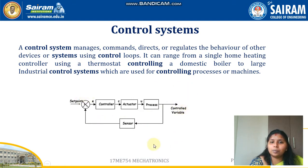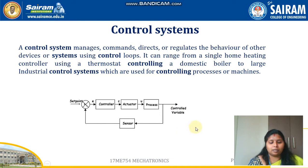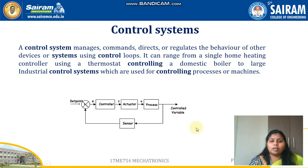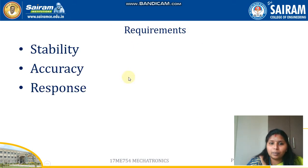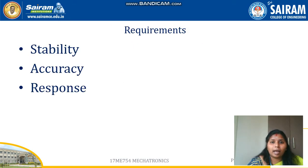This is a simple block diagram showing the controlled system. There are three requirements of a control system: one is stability, and the others are accuracy and response.